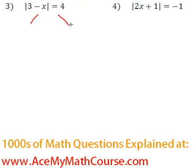So we're going to split up the insides of the absolute value here. The first one is just going to have positive 3 minus x is equal to 4. And on the other side, we're just going to have negative 3 minus x equals 4.